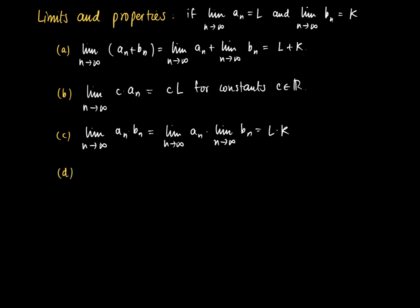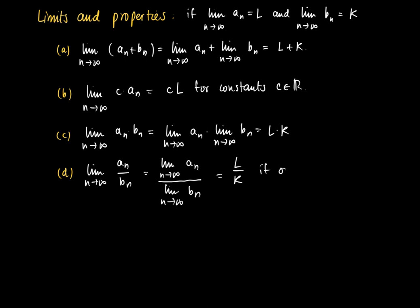What about dividing two sequences? The limit as n goes to infinity of a_n divided by b_n: this will work as long as b_n does not converge to zero. So if k is not equal to zero, then we may calculate the limit as n goes to infinity of a_n divided by b_n as the limit of a_n divided by the limit of b_n, which equals l divided by k. But be sure that k must be not equal to zero.